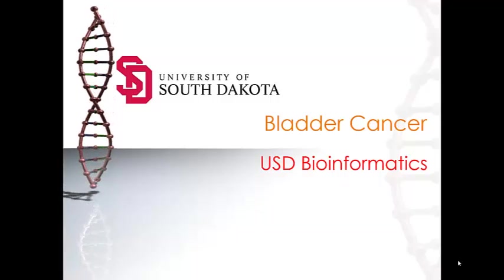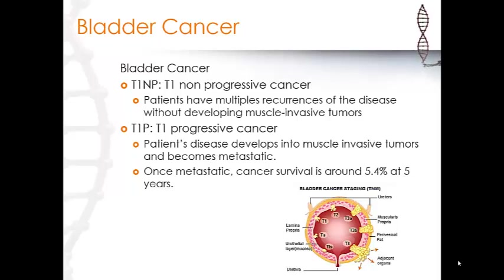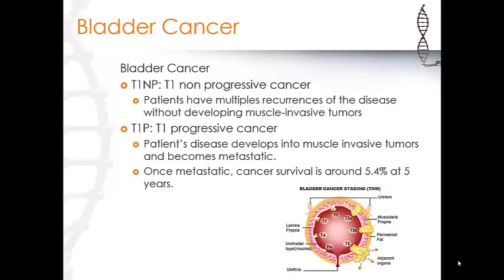There are two types of bladder cancer in the T1 stage. What the T1 stage means is that the cancer has infected and spread towards the connective tissue. In the T1 stage there is the T1 non-progressive cancer and the T1 progressive cancer. Initially there wasn't a way to differentiate if a patient has a progressive or non-progressive type.